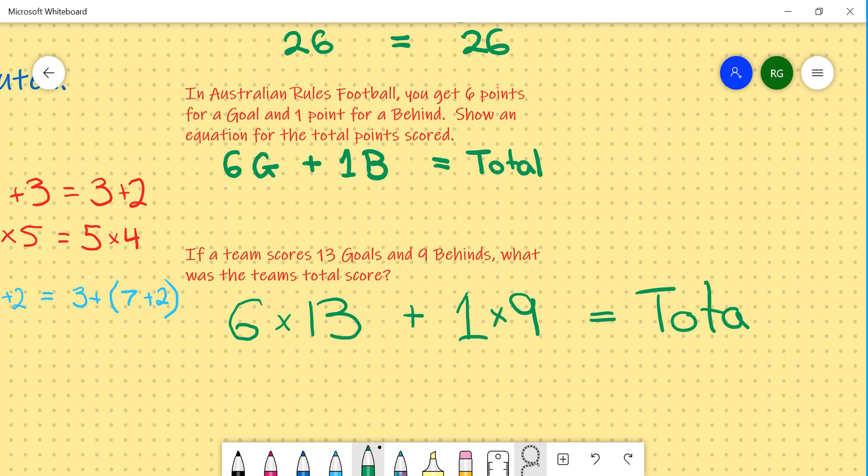Commonly when we are doing algebra, we don't often write 1b. We can simply write b because a b by itself represents that there is just 1. Now 6 multiplied by 13 is 78. And 1 multiplied by 9 is 9. And so our total AFL score in this case is 87.